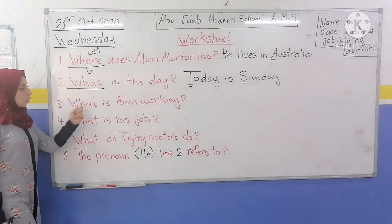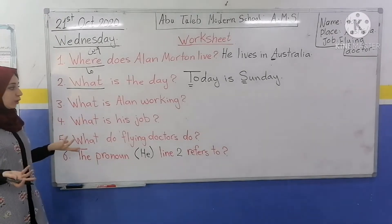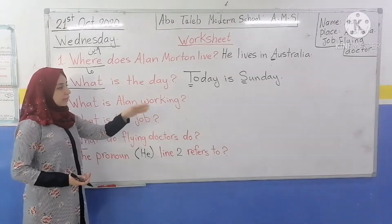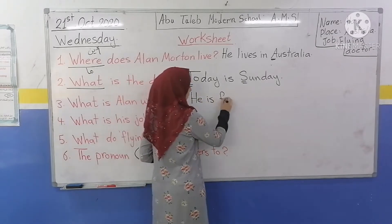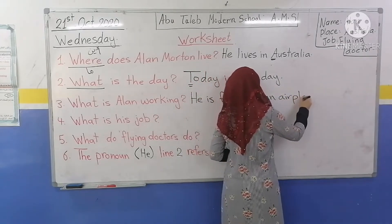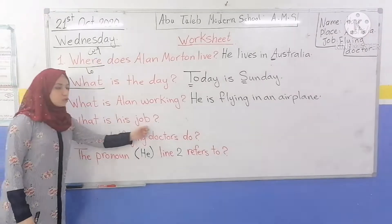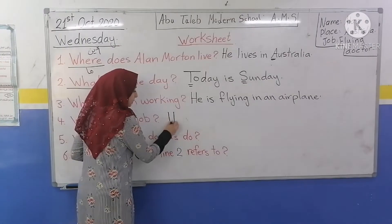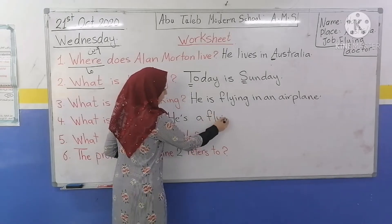Question number 3: What is Alan doing? Alan is working — he is flying in an airplane. He is flying in an airplane. Number 4: What is his job? He is a flying doctor.